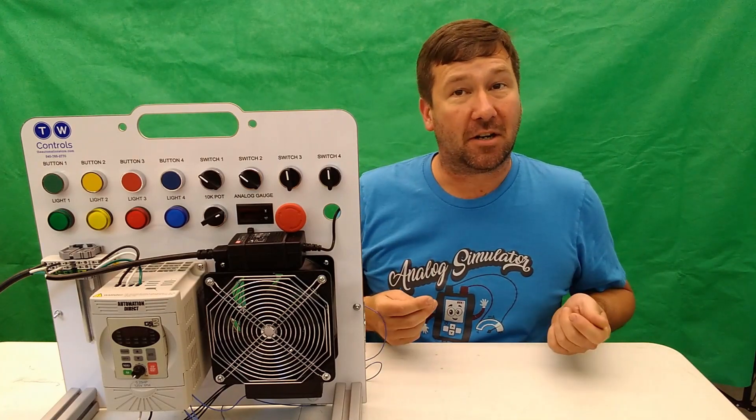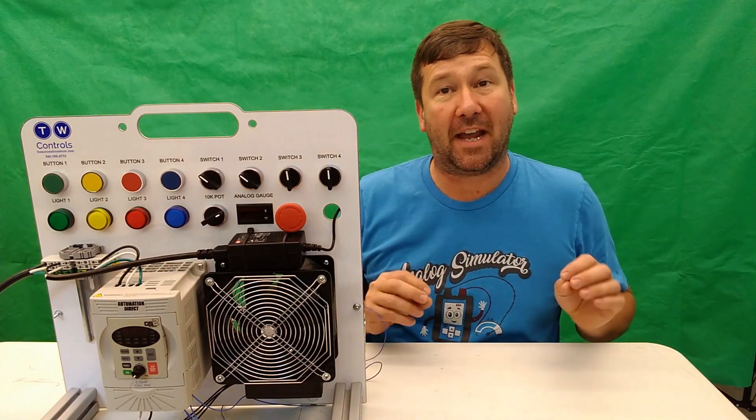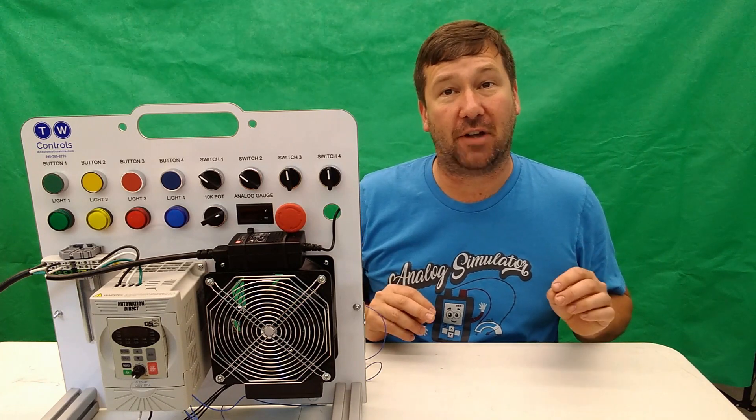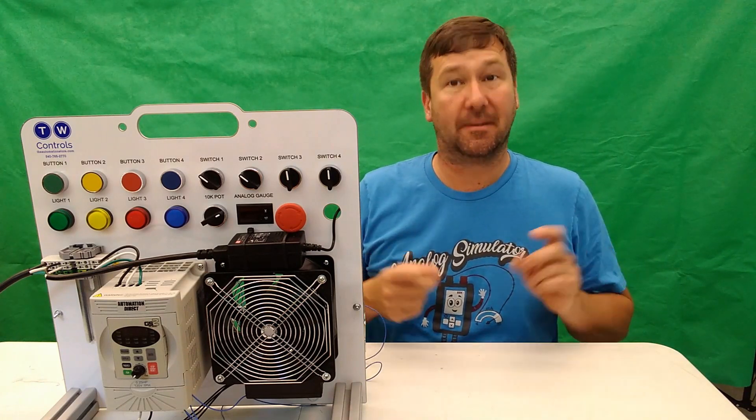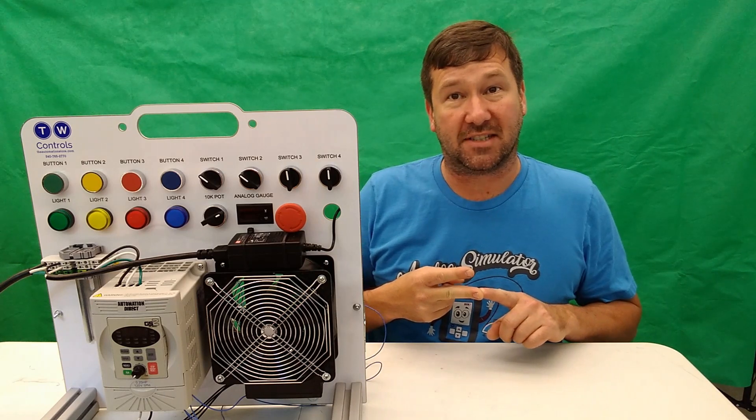Hi, this is Tim, and today we're going to talk about the two most popular types of analog signals used in industrial applications, and that is the milliamp signal and the DC voltage signal.